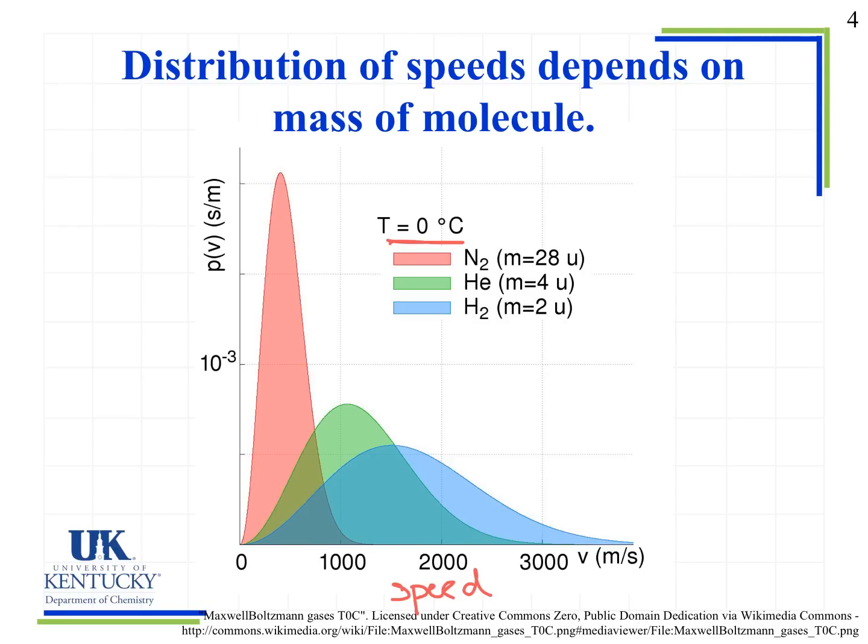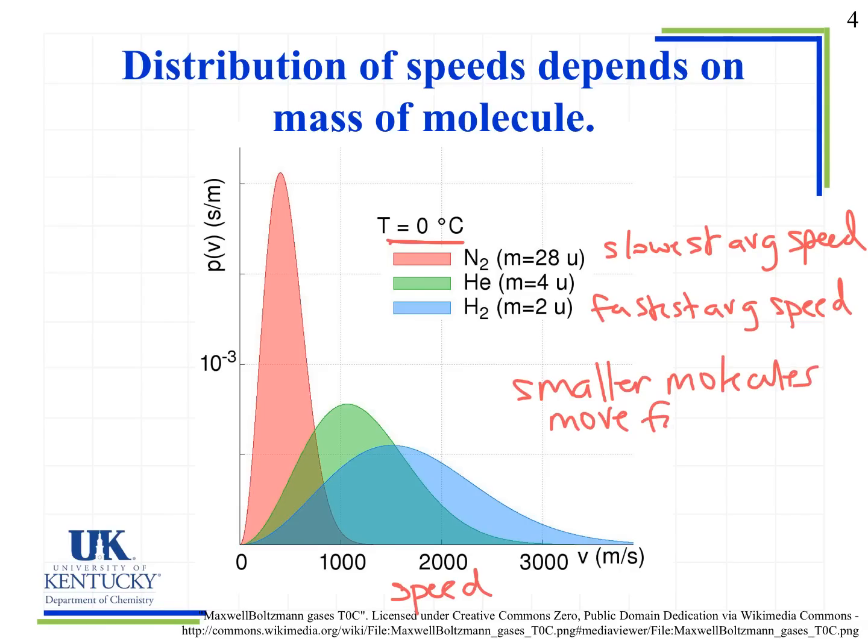So what we notice here is that nitrogen, which has the biggest mass, is actually the slowest average speed. And we look at hydrogen, which is the smallest, it has the fastest average speed. Now notice again, we are talking about average speeds. Just like with the changes in temperature, we see distributions over a range. So what we get from this is that smaller molecules move faster on average.